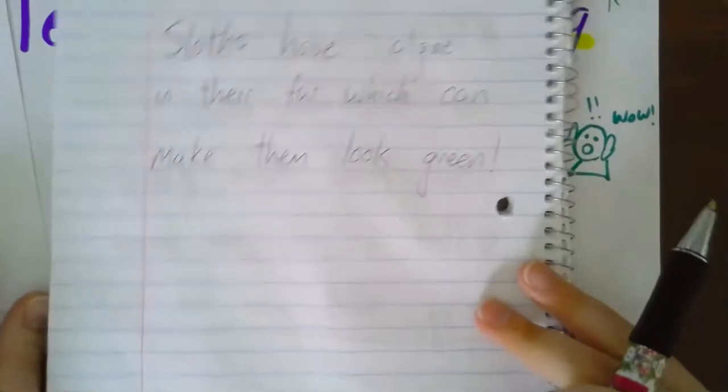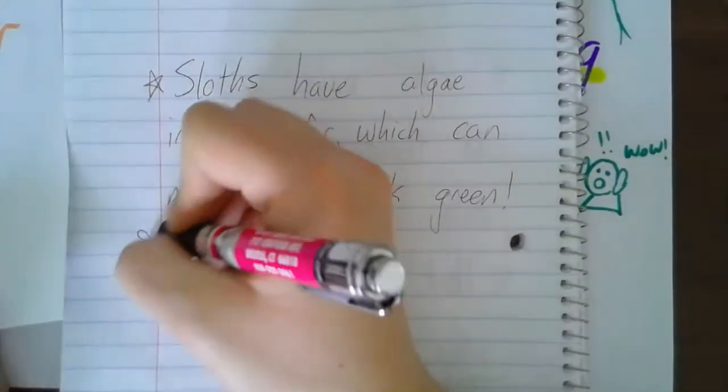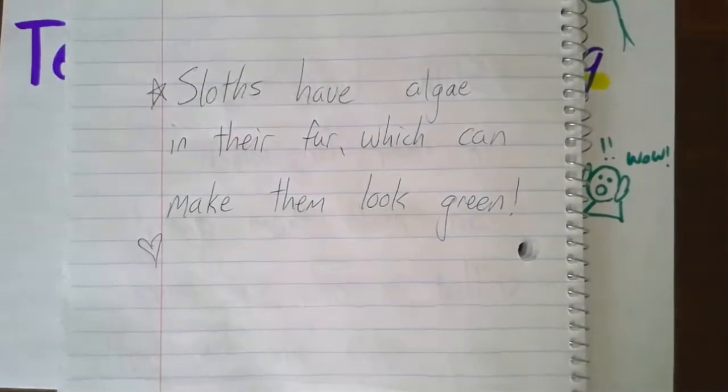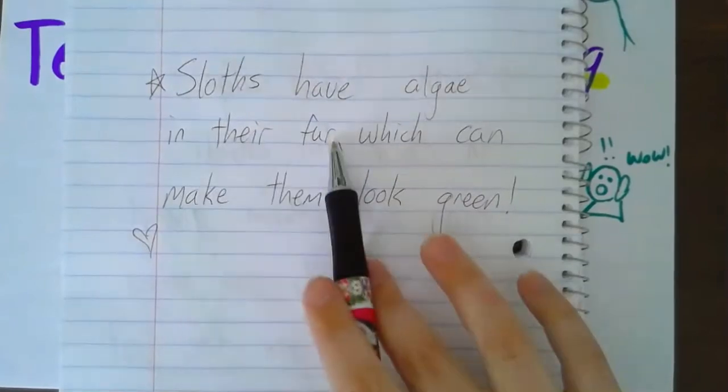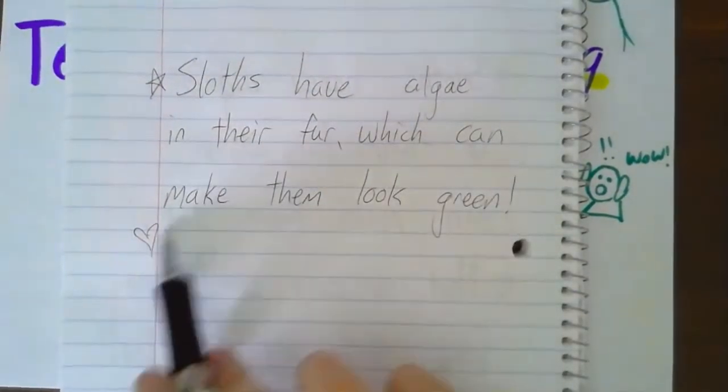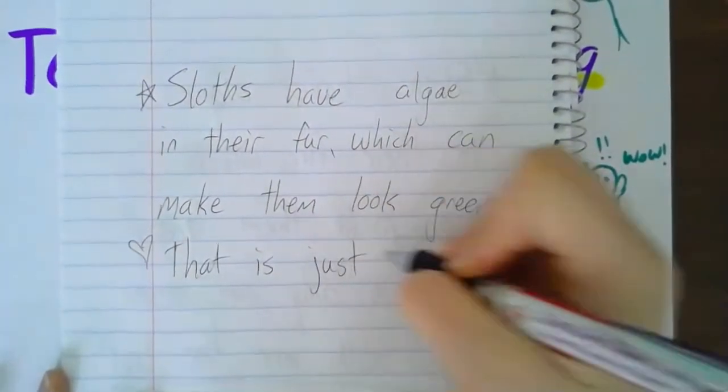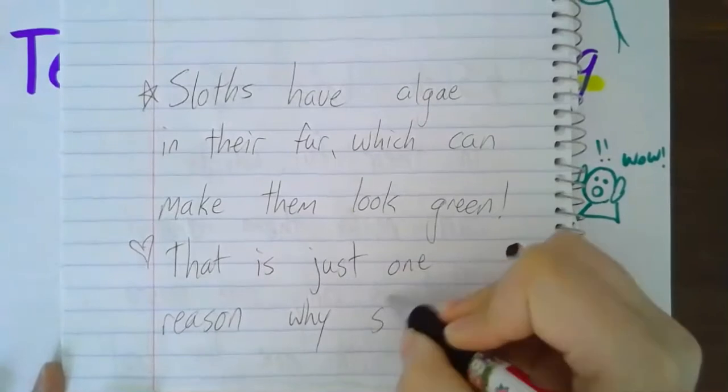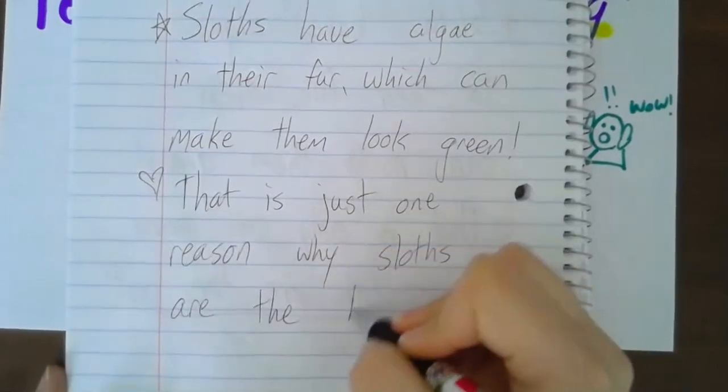To make me go, well, it is. Okay, I need to tell what my opinion is. Did anyone remember what my opinion was? Which animal did I think was the best? Yeah, of course. So I'm going to finish this one introduction. Sloths have algae in their fur, which can make them look green. Opinion time. That is just one reason why sloths are the best.